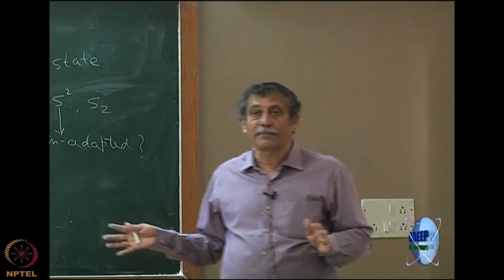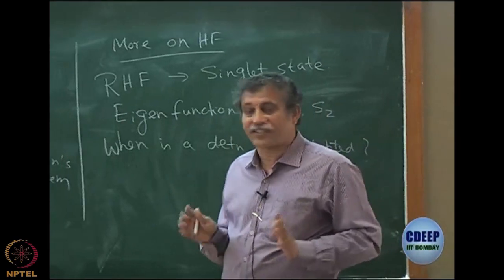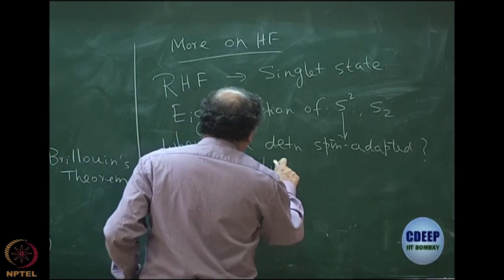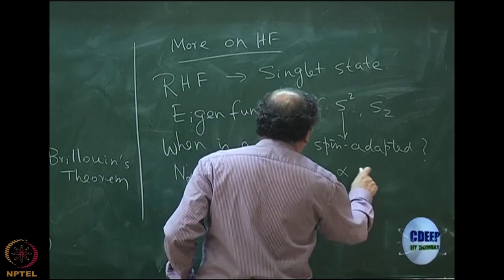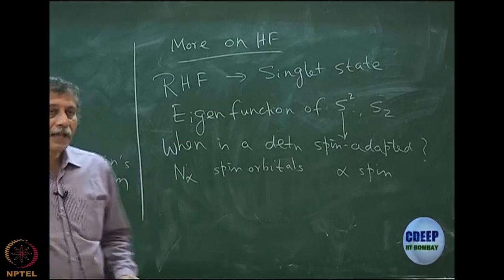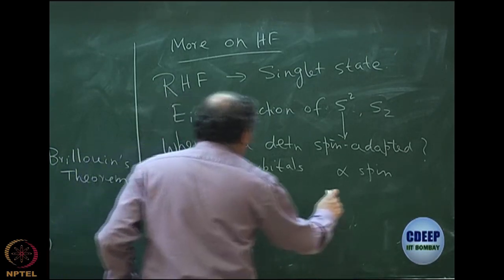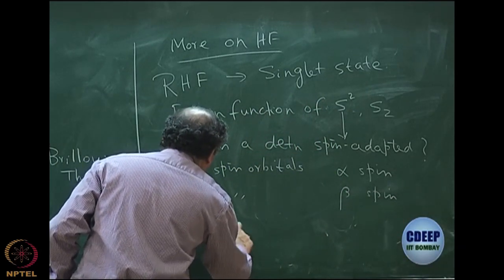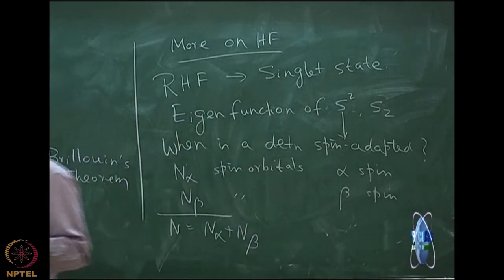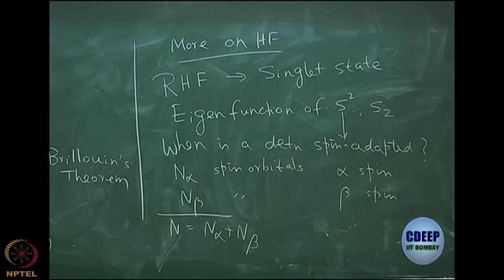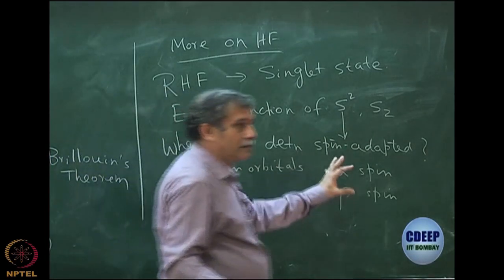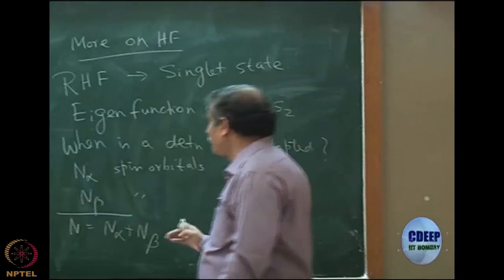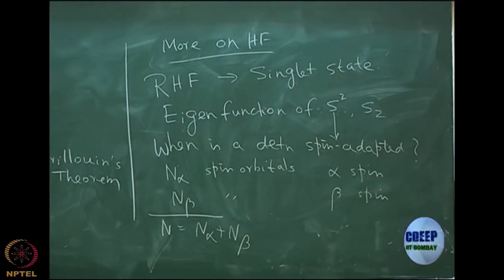When discussing spin adaptation, we have to worry about what kind of spin it is — how many are alpha spin, how many are beta spin. We write not in terms of general spin orbitals, but a space part with alpha and beta attached. Assume that in a determinant we have n-alpha spin orbitals of alpha spin and n-beta spin orbitals of beta spin, such that n equals n-alpha plus n-beta.